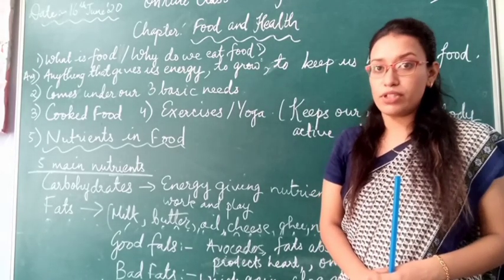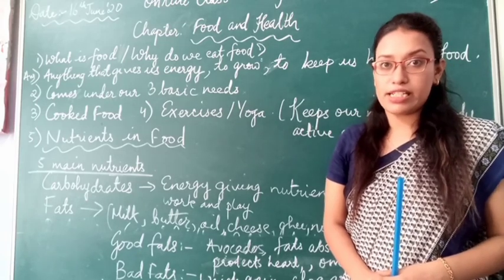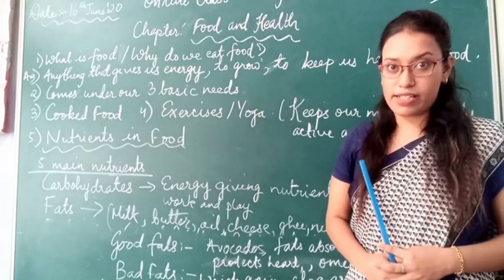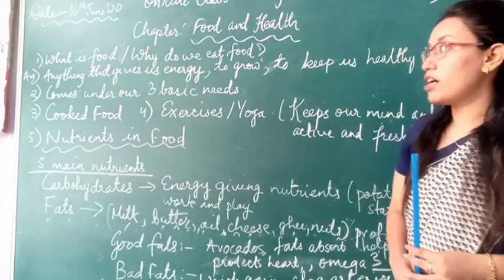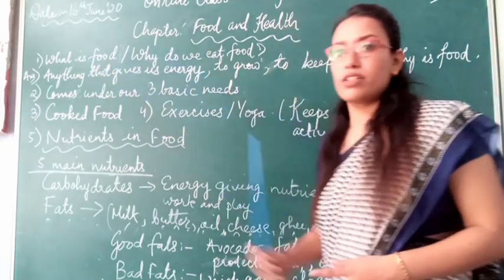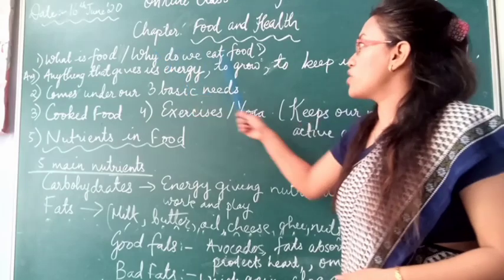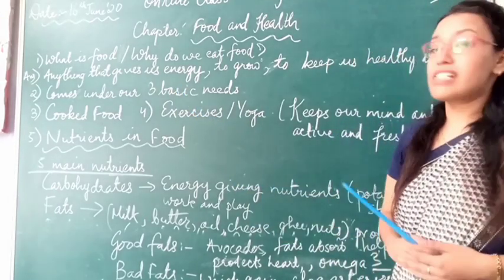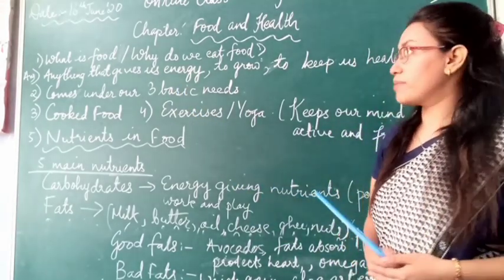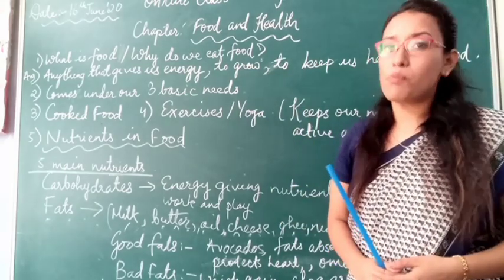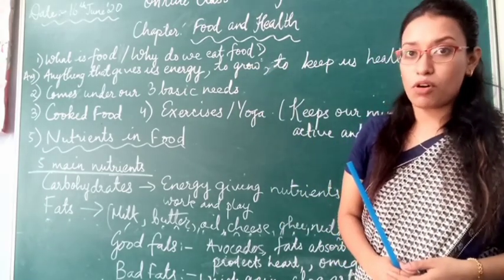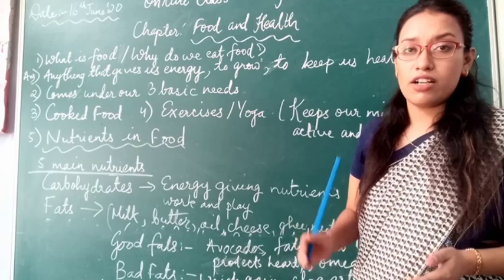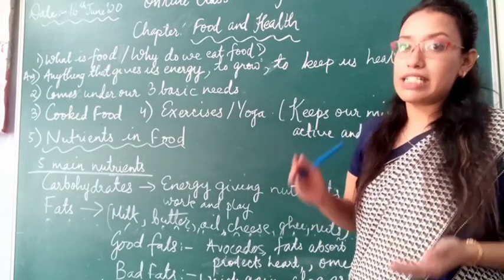We have to eat food — carbohydrates, rice, or meat — every 3 hours because our food takes time to digest. What is food? What do you understand by food? Why do we eat food? Anything that gives us energy. Food gives us energy to grow. You have seen a small baby being born. You grow from an infant to a child, from a child to a teenager, from a teenager to an adult.